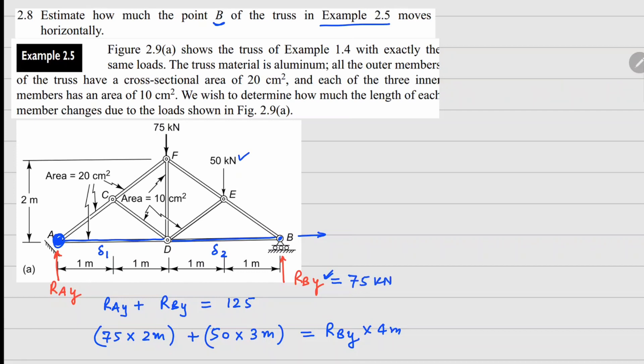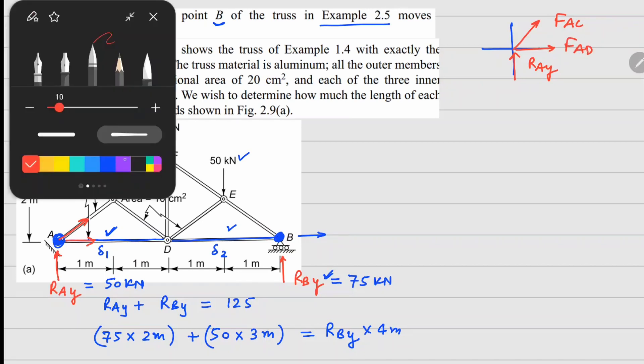Now, to solve for these two members we can analyze joint A and joint B. First, let's look at joint A. The forces on joint A will be the reaction RAY and two member forces: one going in the direction of AC, which is going this way, and the second one is here, which we can call FAD.